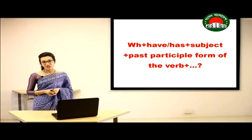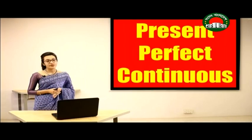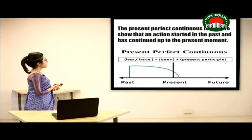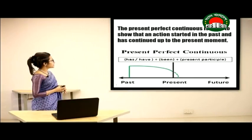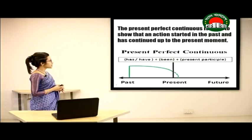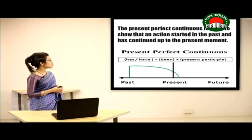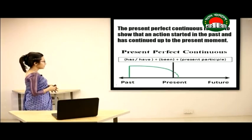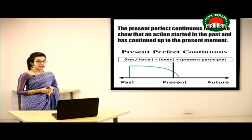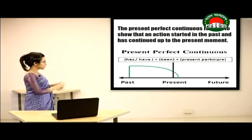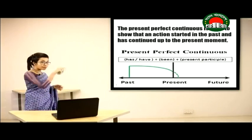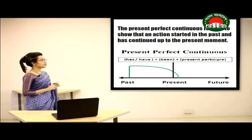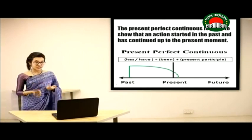Now let's look at Present Perfect Continuous Tense. This tense is used to show that an action started in the past and has continued up to the present moment. As shown in a picture with a green line, the event started in the past and is continuing up to now — that is why we use Present Perfect Continuous Tense.